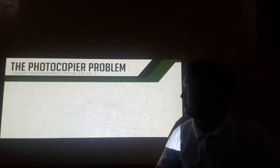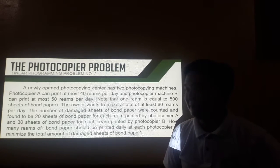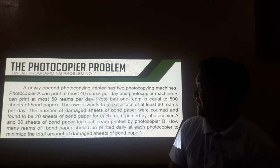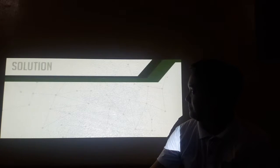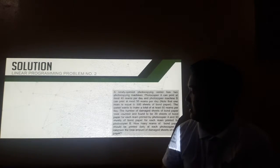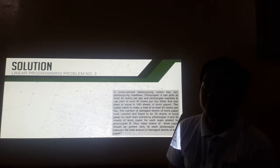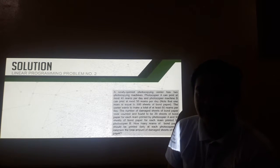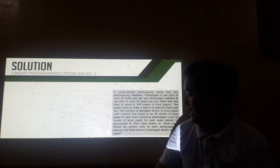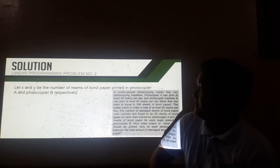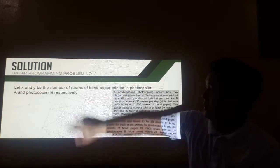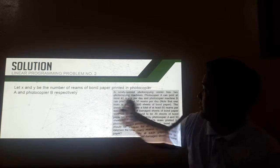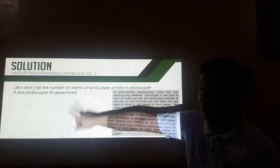Okay, so the photocopier problem. It's a little bit long, so I'll just ask you to read it on your handouts. Let's just proceed to the solution. The first thing to do is we need to identify our decision variables. Let x and y be the number of rims of bond paper printed in photocopier A and photocopier B, respectively.